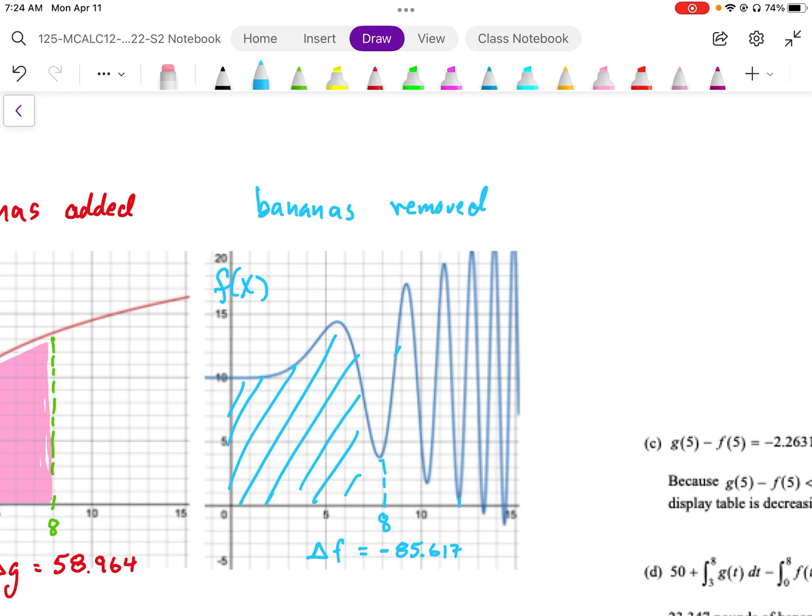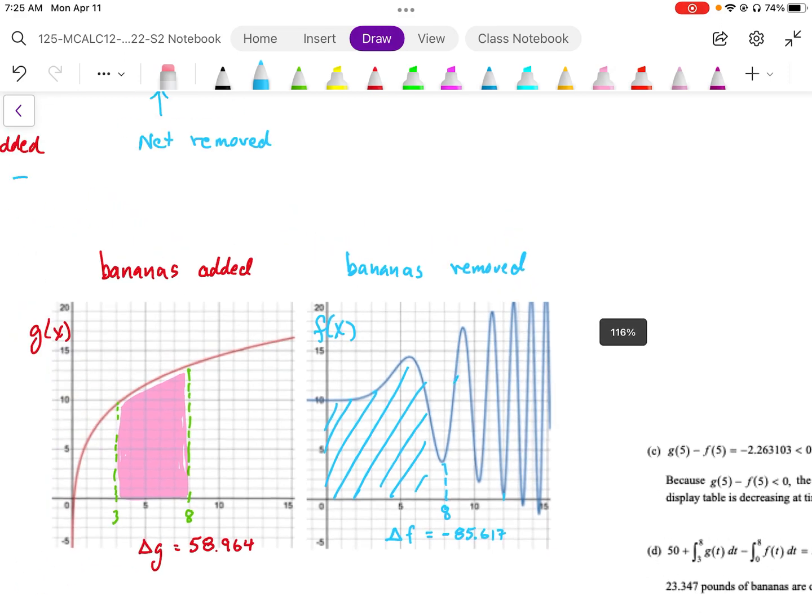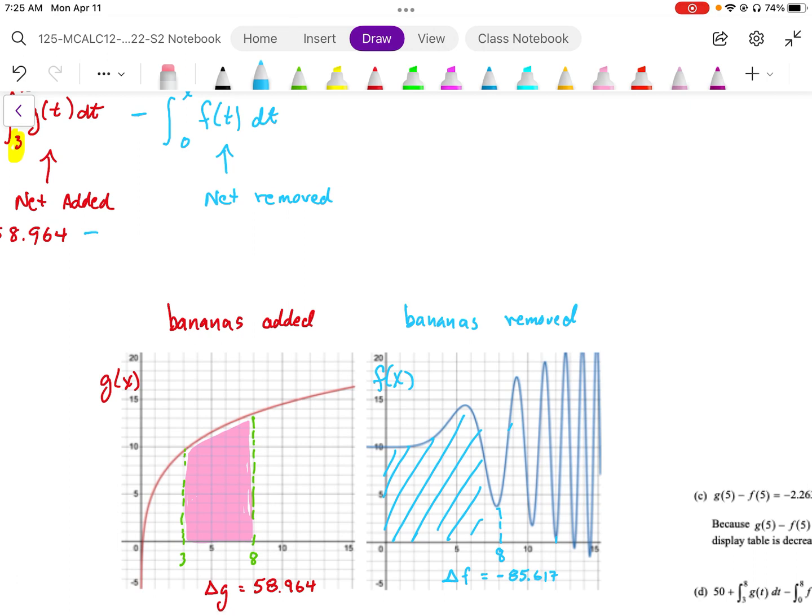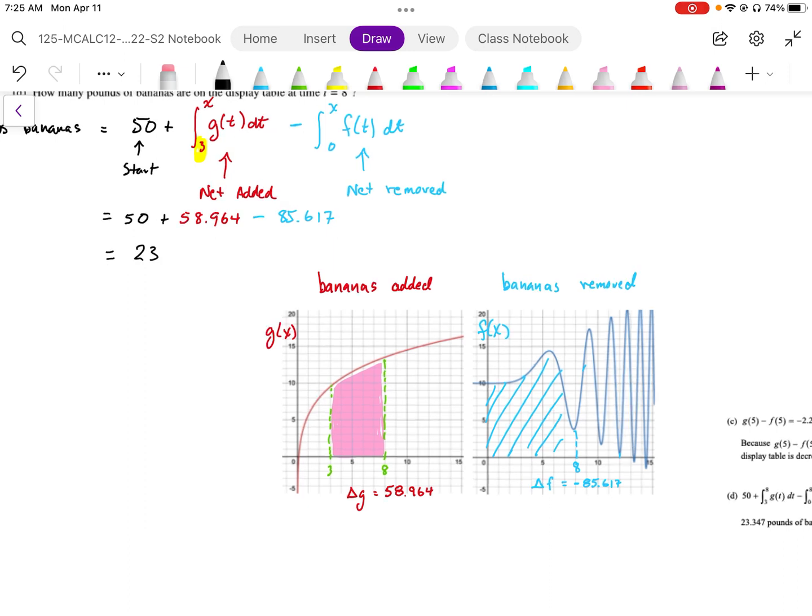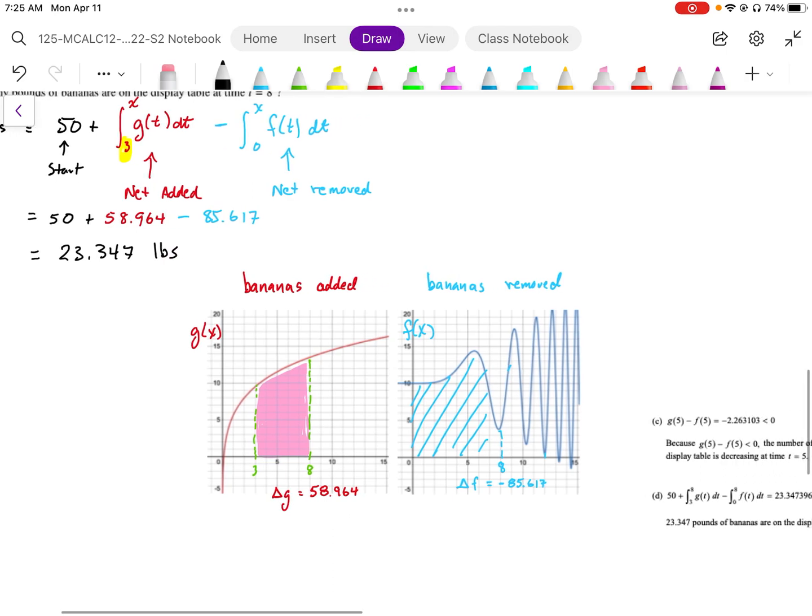I've signed that as negative because we're going to remove that. So we're taking away 85.617, and the total amount left over that we have is going to be 23.347 pounds. Okay, so there's our answer.